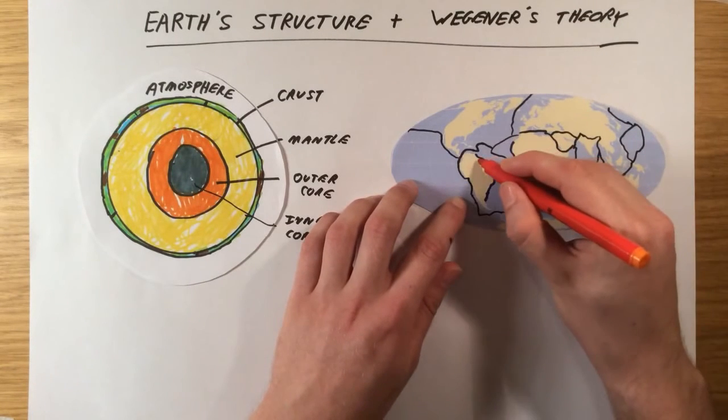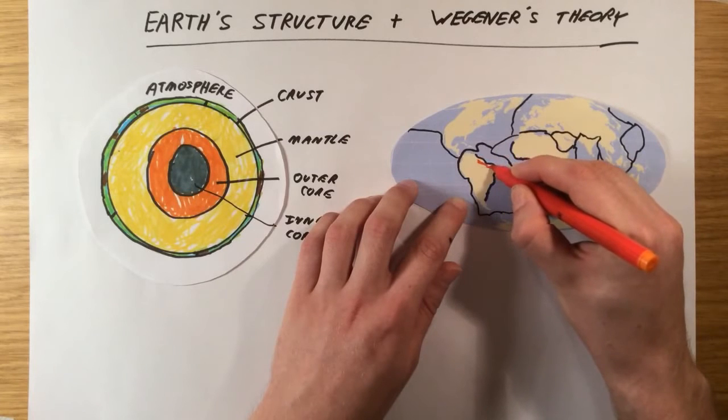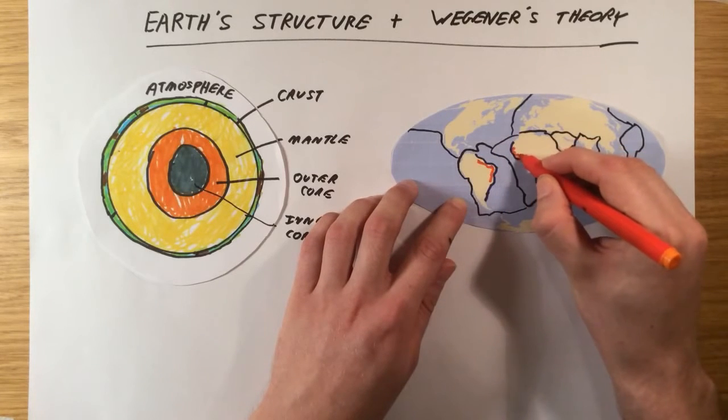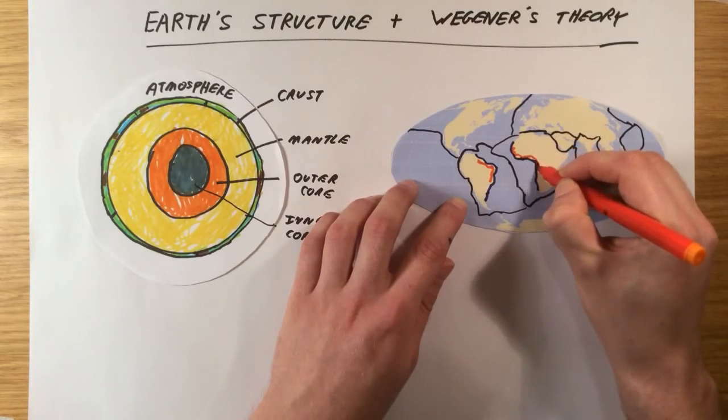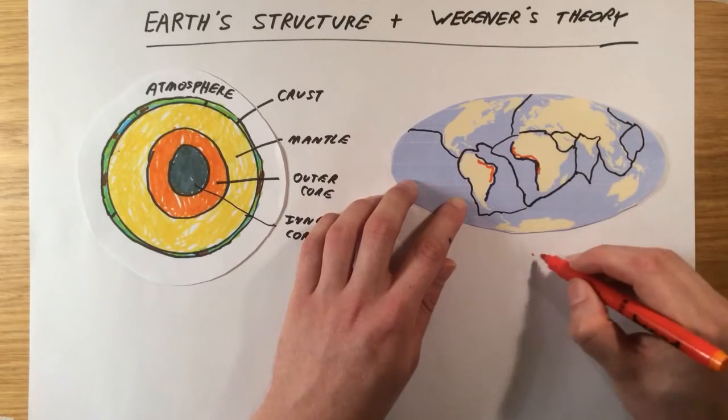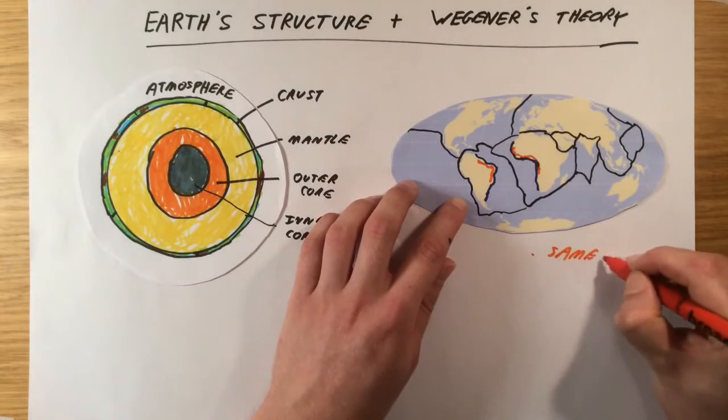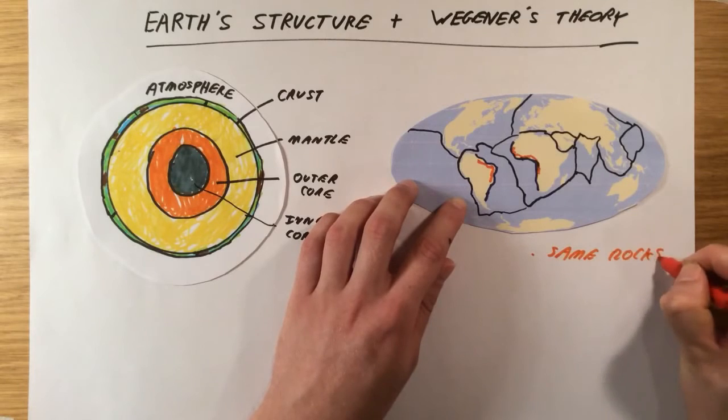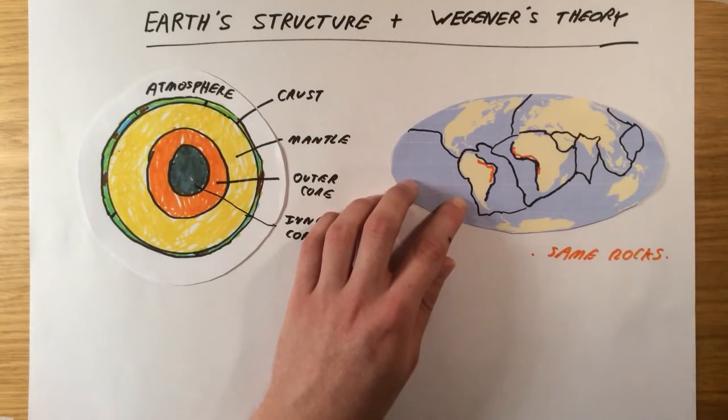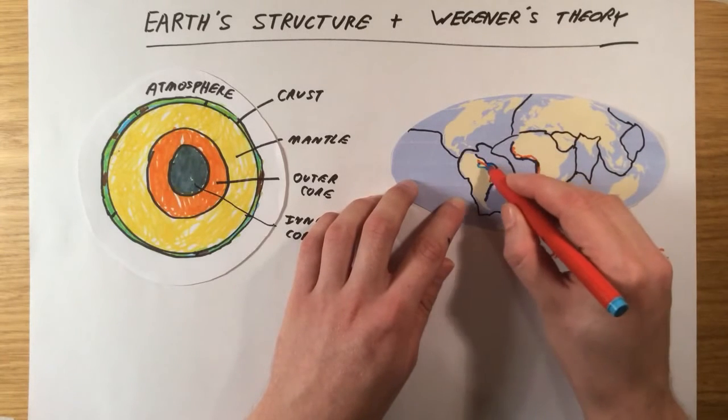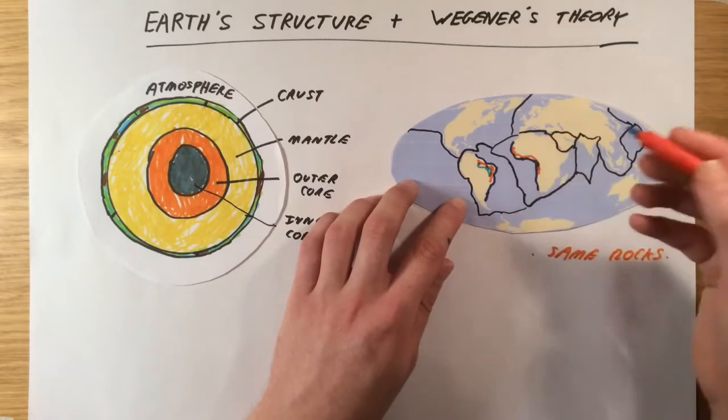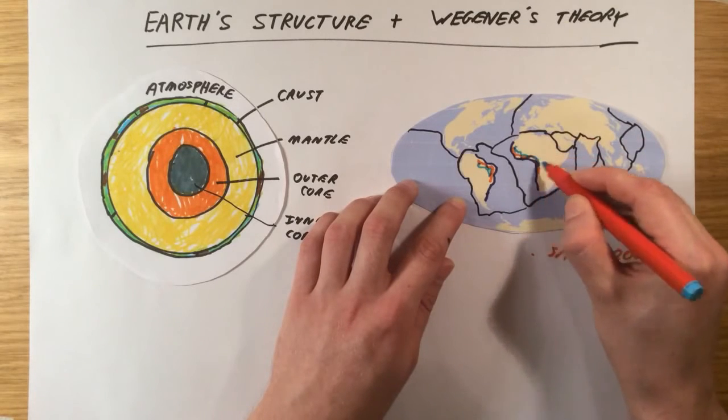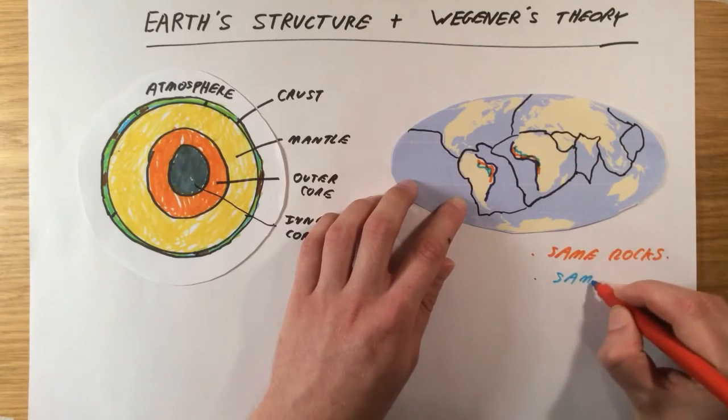So he did some experiments and he looked at the rocks deep down in the ground on the coast here and on the coast of Africa here, and he found that before a certain point the rocks were all the same. He also started to look at the fossils within those rocks and he found that, surprise surprise, the fossils were the same too. The fossils on the coast here, before a certain point quite deep down in the ground, were the same as the fossils there.